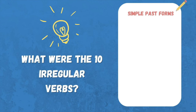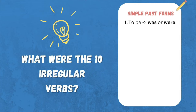What were the 10 irregular verbs in this lesson? Let's go through them. The first one is to be. To be in the past is was or were. The Statue of Liberty was a gift from France to the United States in 1886. She was excited about the upcoming vacation. The weather was perfect for a day at the beach.